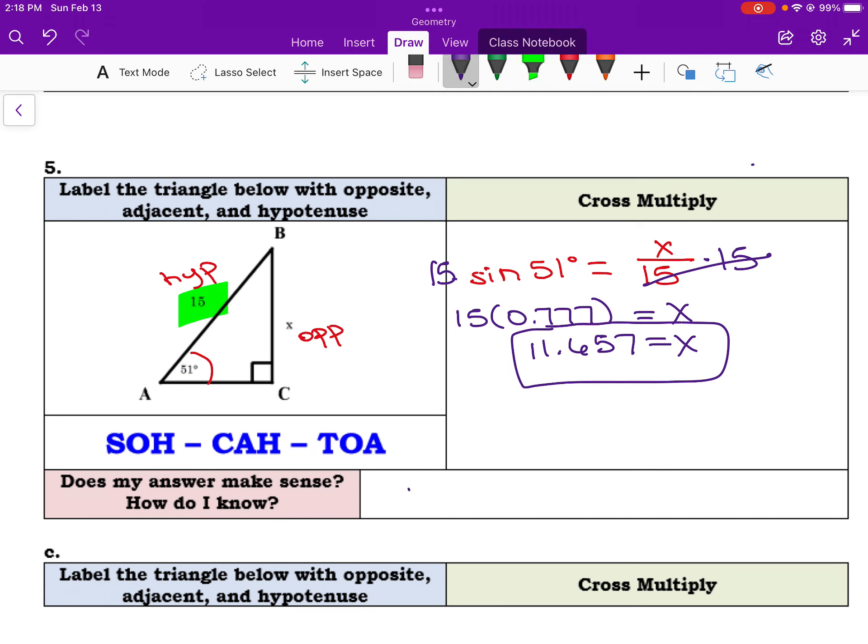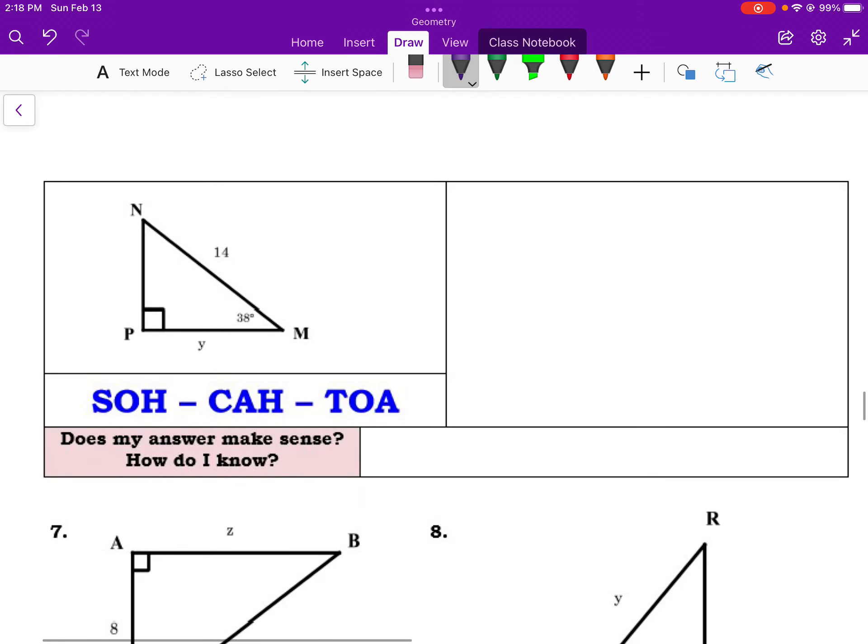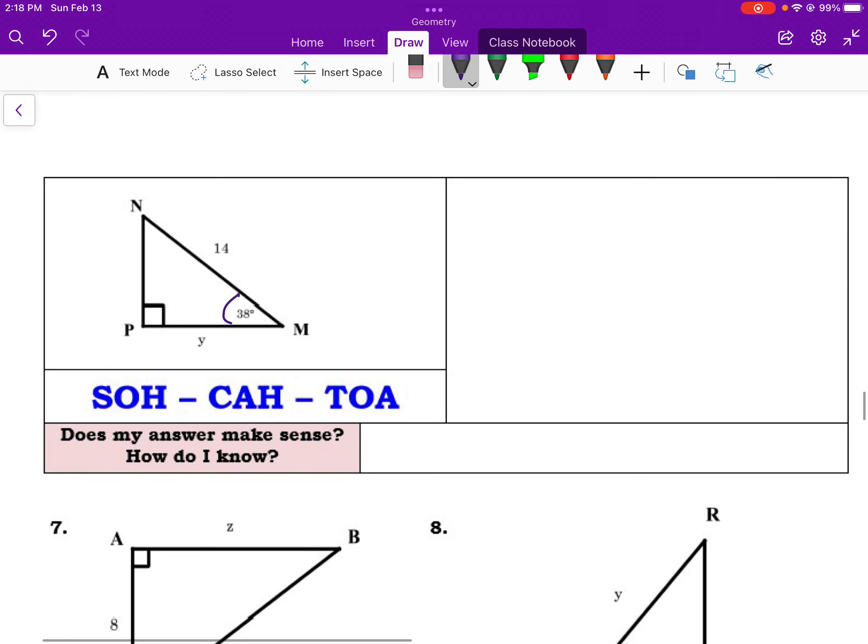And then that does make sense as well because it's shorter than the hypotenuse. Remember, hypotenuse always has to be the longest side. So yes, this makes sense too. Next one, kind of split from the instructions there, but we have 38 degrees. And with respect to this guy, we have the adjacent and the hypotenuse. So that's screaming out cosine. So we know cosine of 38 degrees equals the adjacent, which is y, over the hypotenuse, which is 14.